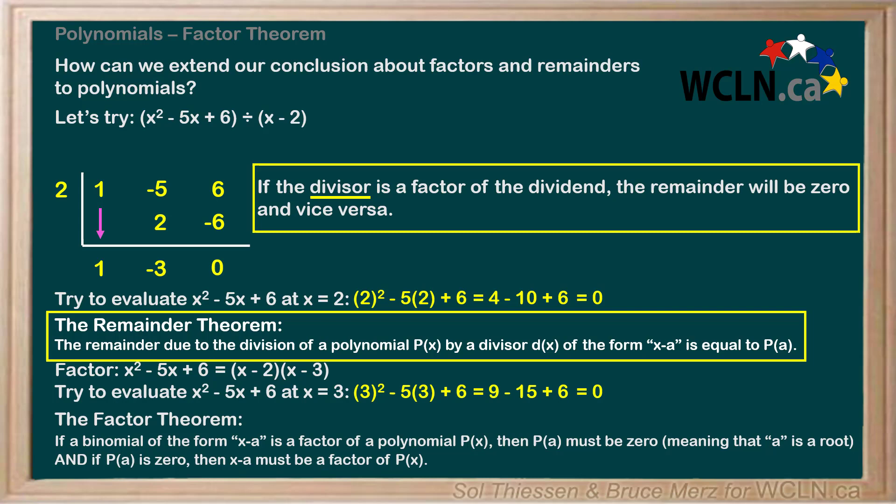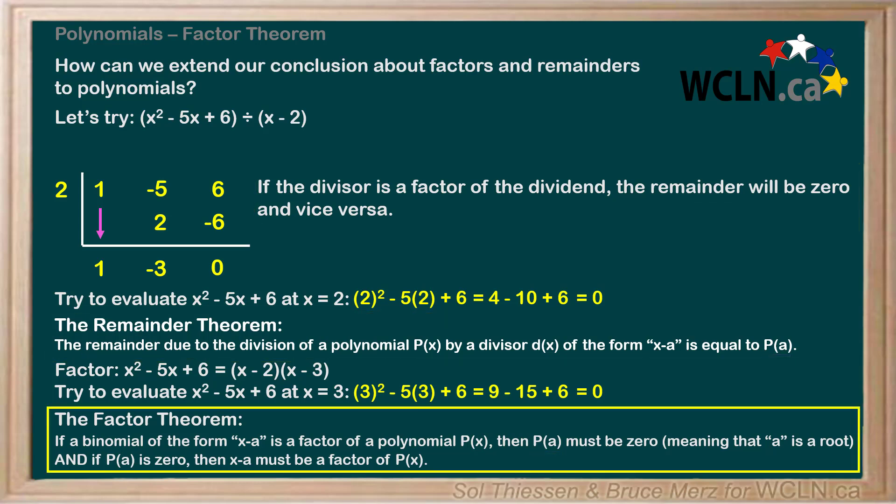If you swap divisor with binomial of the form x minus a, and then swap dividend with polynomial p of x, and finally replace remainder with p of a, since the remainder theorem tells us p of a and the remainder are equal, you come up with the factor theorem as we have it written. This is huge! Now we have a method to determine factors of any polynomial, including those of degree 3 or higher.